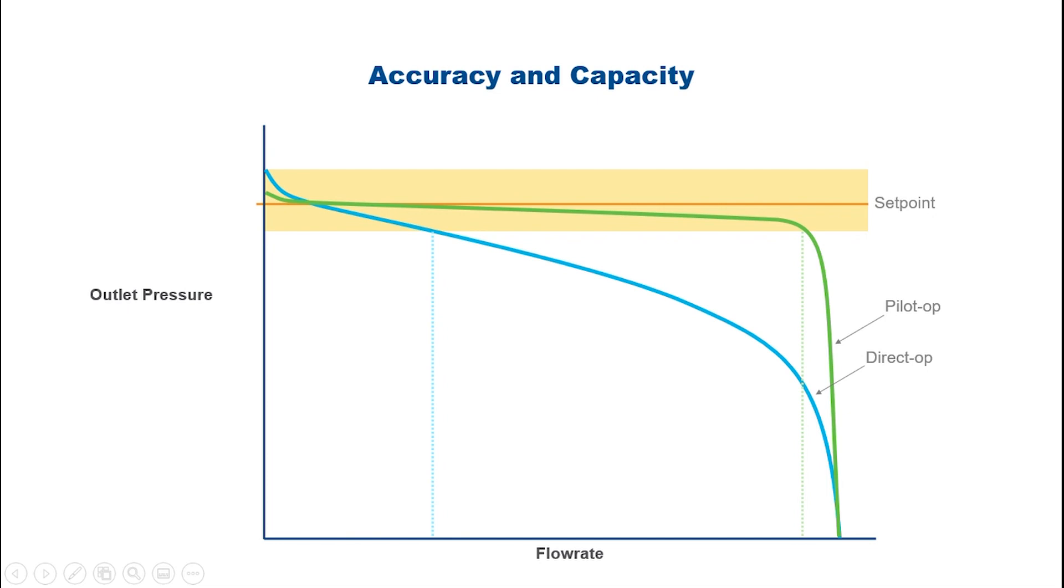In general, spring-loaded regulators require 20 to 40 percent offset from set point, whereas pilot-operated regulators require only 1 to 5 percent.